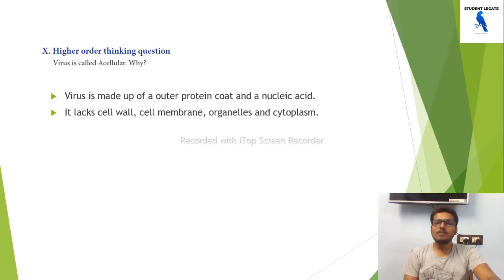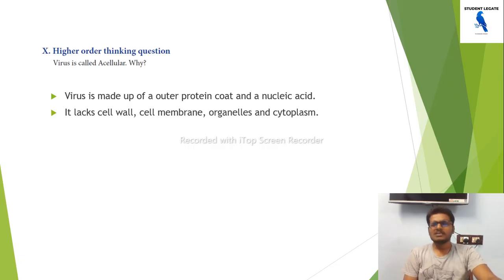Complete the diagram comparing plant and animal cells. Plant cells have cell wall, cell membrane, organelles, and cytoplasm. Both cells have nucleus, cytoplasm, Golgi body, and mitochondria.